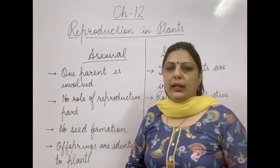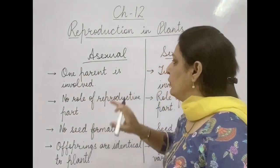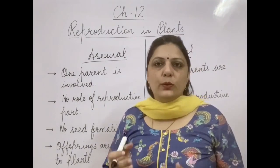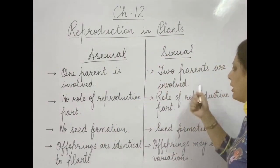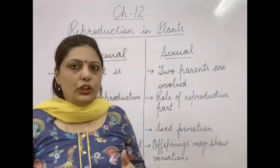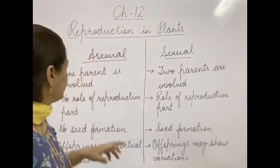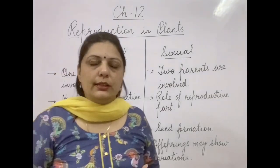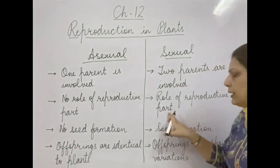I have drawn a table to help you understand the differences between asexual and sexual reproduction. The first point: in asexual reproduction only a single parent is required — with the single parent and its vegetative part, the next generation is produced. In sexual reproduction, two parents are involved for seed production. The second point: there is no role of the reproductive part, i.e., the flower, in asexual reproduction, whereas the flower plays the main role in sexual reproduction.